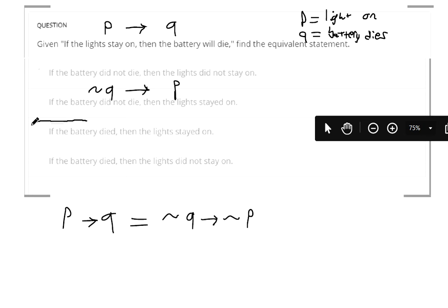So this statement here, if the battery died, that's Q, then the lights stay on. These two aren't the same. They don't have the same truth values in the truth table. And then the last one here, if the battery died, then the lights do not stay on.